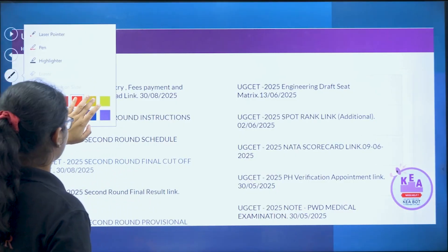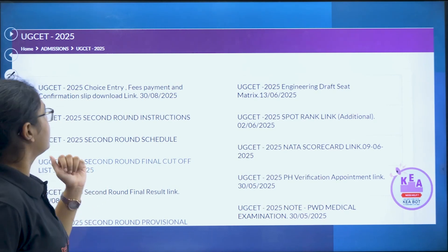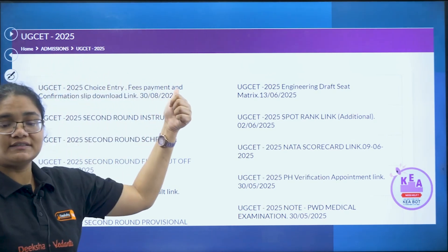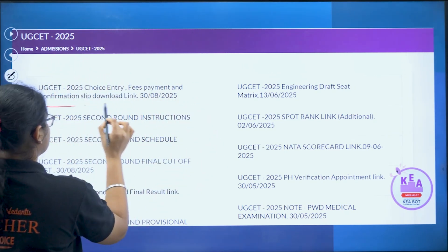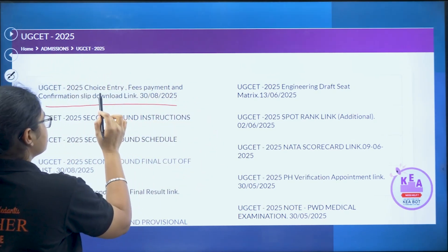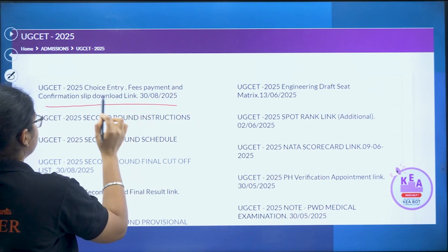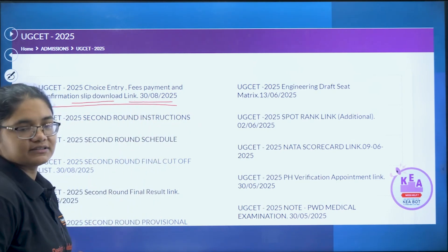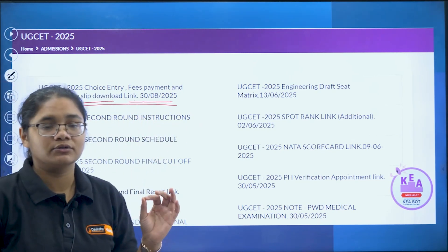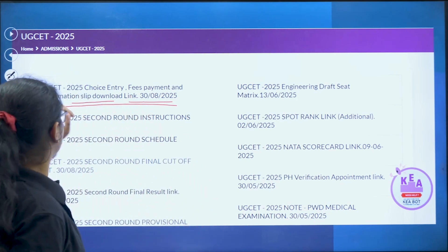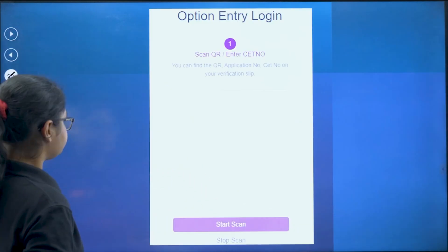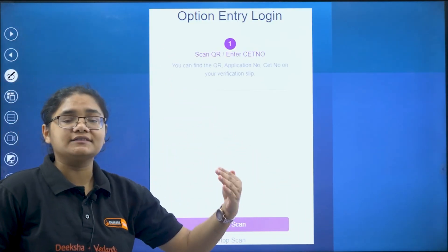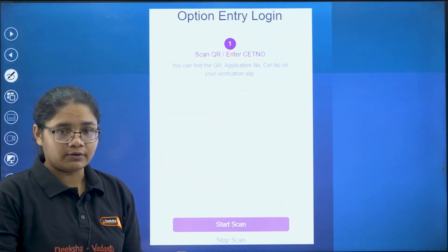First, go to the KEA official website and under the admission section, under UGCET 2025, you will find the first link — that is 'Choice Entry, Fees Payment and Confirmation Slip Download.' This link was activated on 30th August. Once you click on this link, it will ask you to login.